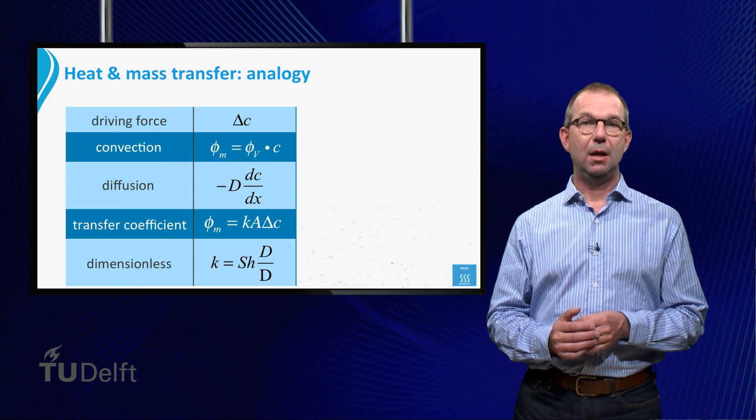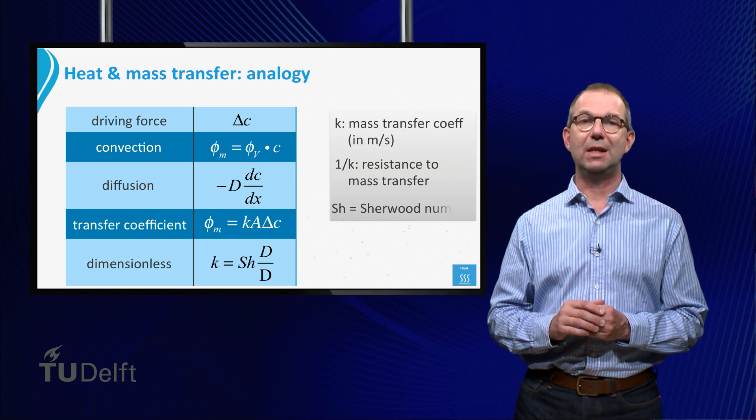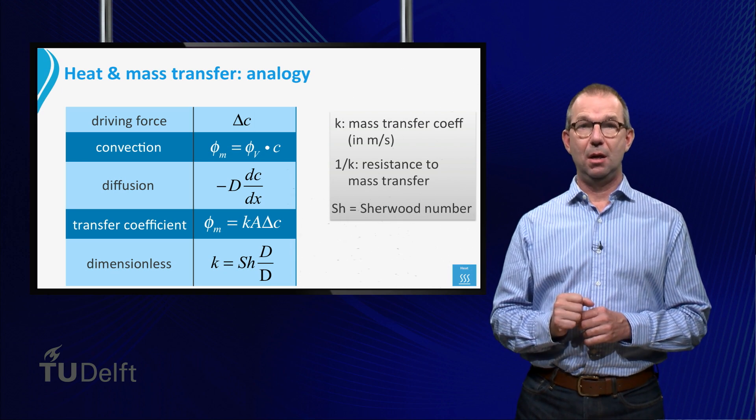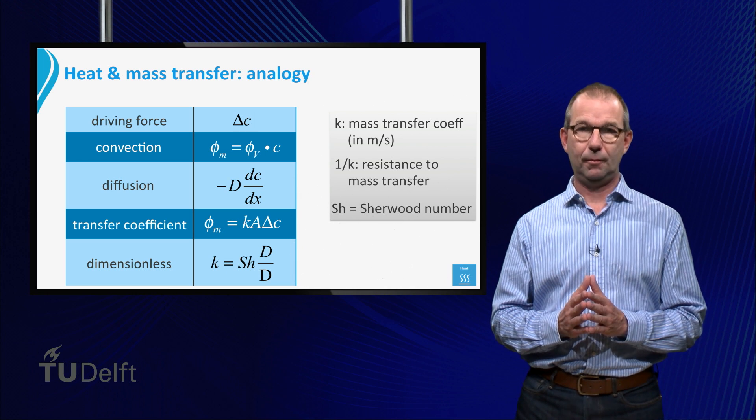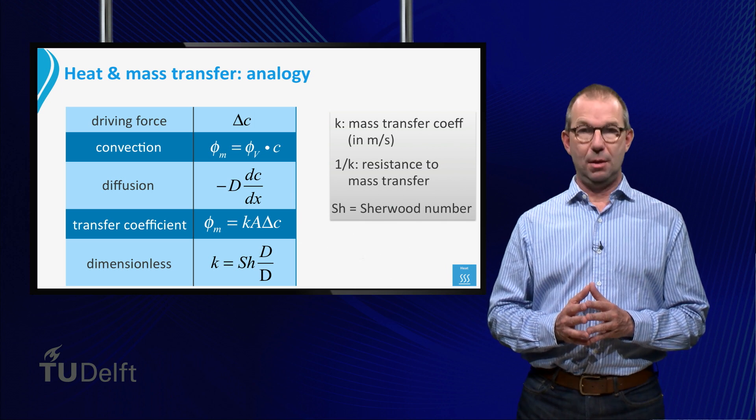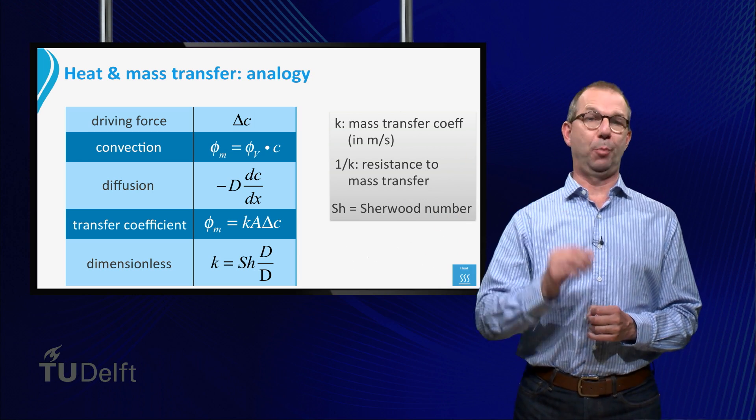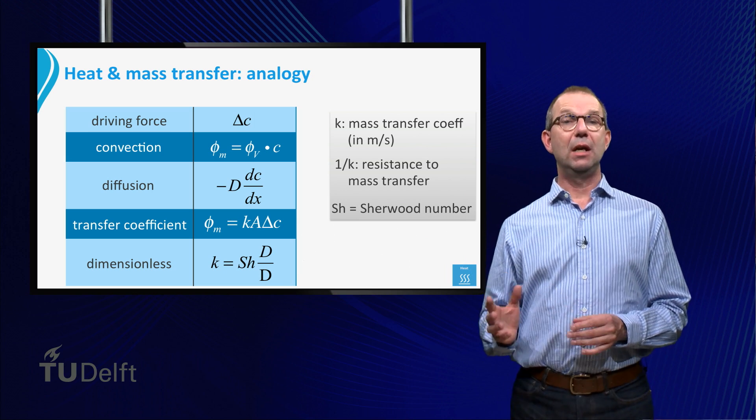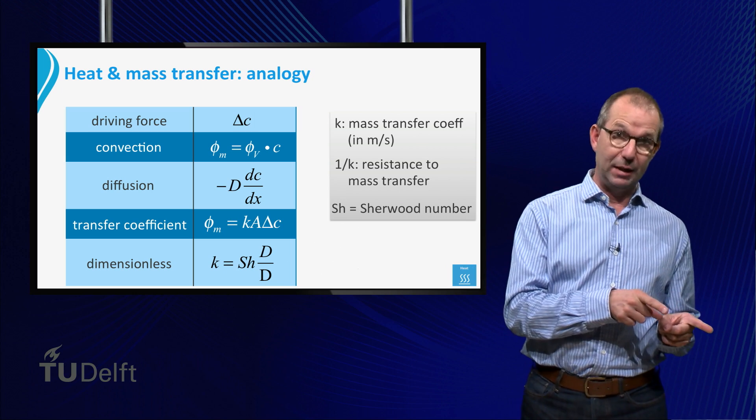So, if we look at the mass transfer table, we see that the mass transfer coefficient k has units meter per second. The higher the k, the higher the mass flows for a given driving concentration. Again, we can use an analogy with Ohm's law by interpreting 1 over k as a resistance, now to mass transport. Look up the previous lecture on heat transfer and you will see that everything we said on Ohm's law and heat transfer can directly be translated to mass transfer.